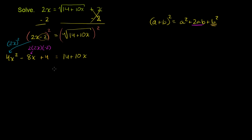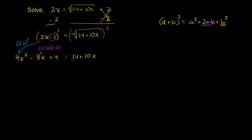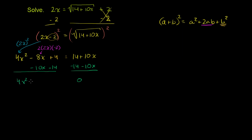Now we have a quadratic equation. To put it in standard form, subtract 14 and subtract 10x from both sides. The right-hand side becomes 0. On the left we get 4x² minus 18x minus 10 equals 0.